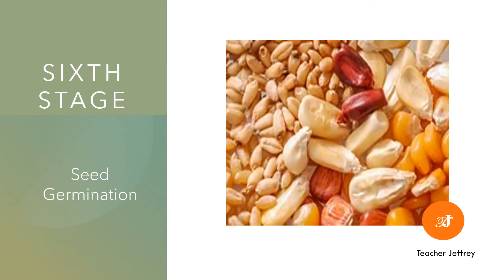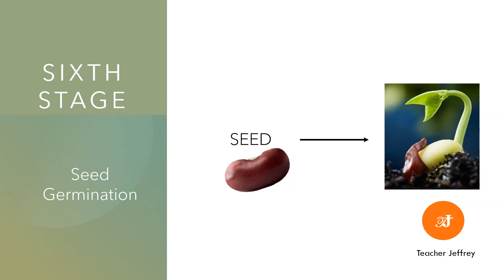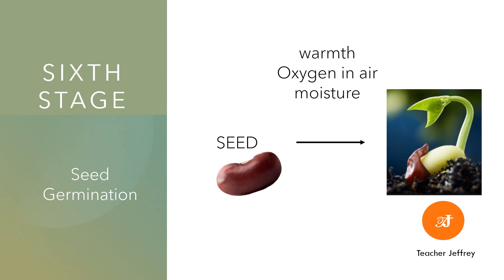The sixth and last stage is seed germination. Seed germination is the process wherein the seed develops into a new plant. With appropriate conditions like warmth, presence of oxygen, and moisture, the seed will develop into a new plant.